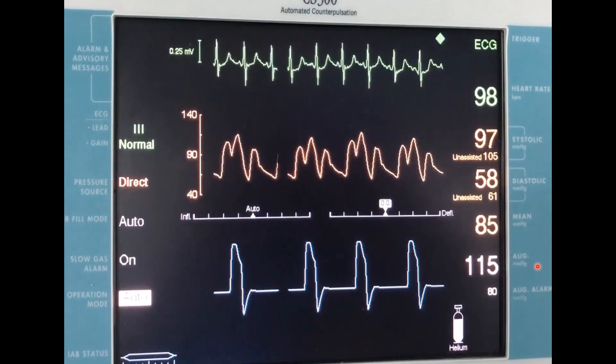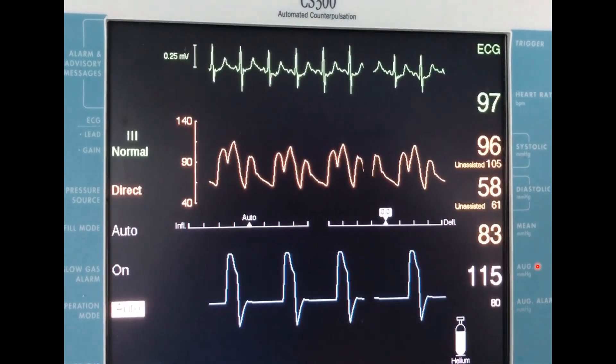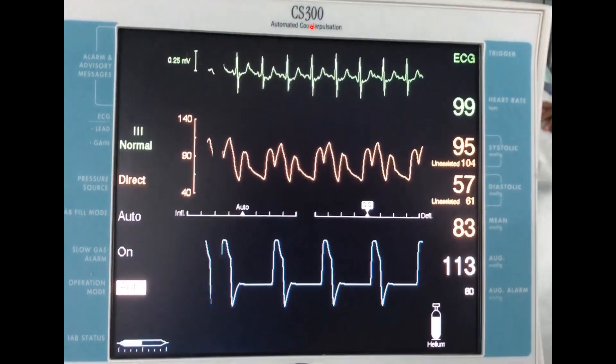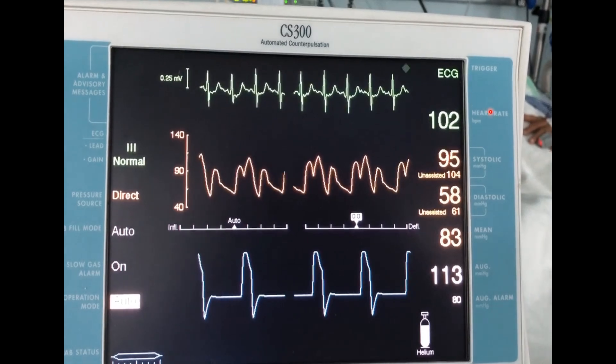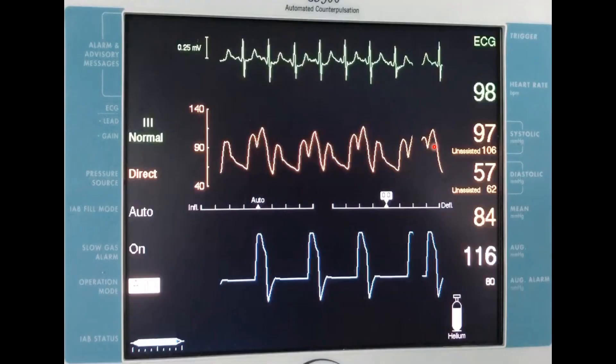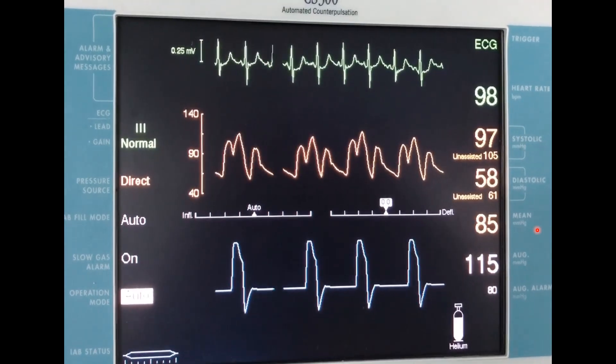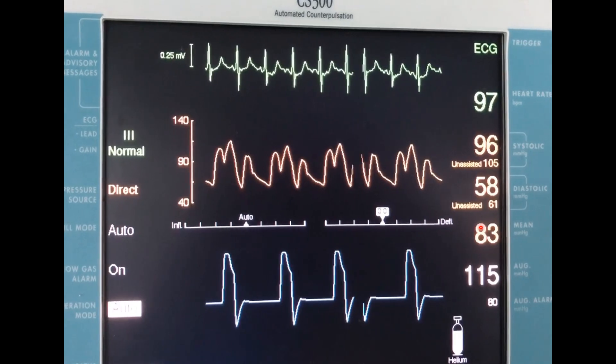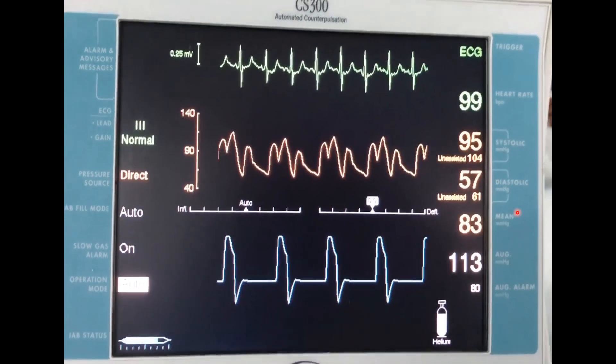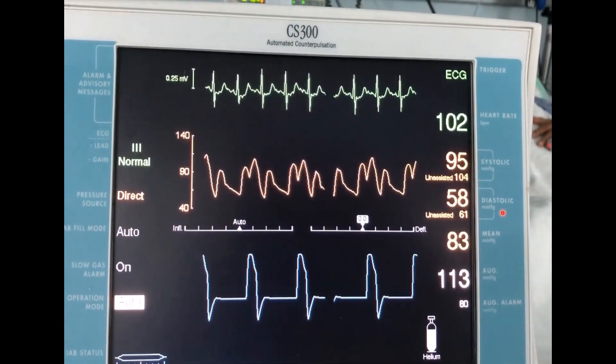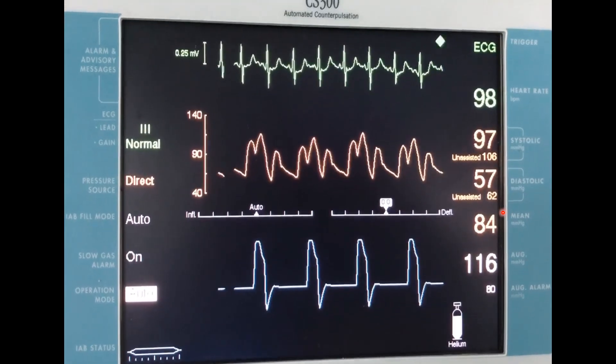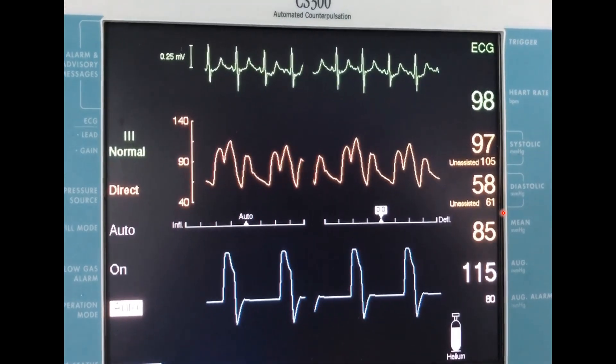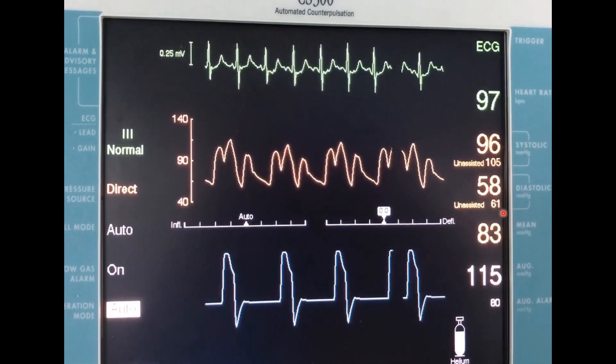If we come for the console, what parameters are on the console? We will find ECG, and here there is the heart rate reading. This is the pressure on the console. For the pressure on the console, the patient here is on one-to-two assist. So we have one beat assisted and the other beat not assisted.